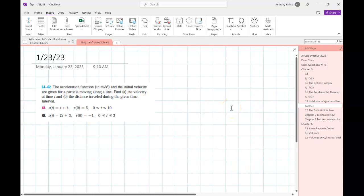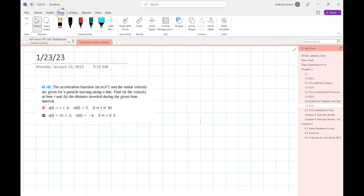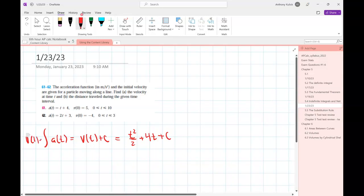The acceleration function in meters per second squared and the initial velocity are given for a particle moving along the line. Find the velocity at time t and the distance traveled during that time. So we know that the integral of a(t) is going to equal v(t) plus c, right? So if I do that, v(t) plus c is going to be t squared over 2 plus 4t plus c. And if I know that v(0) is 5, I know that 0 squared over 2 plus 4 times 0 plus c has to equal 5, or c is equal to 5.